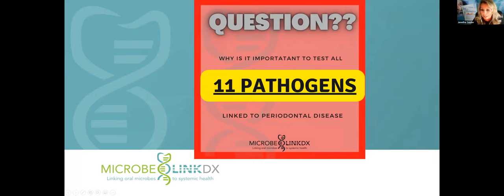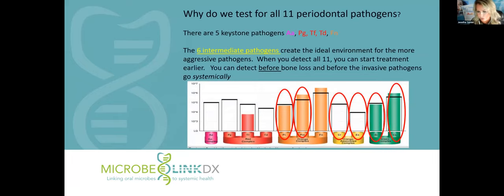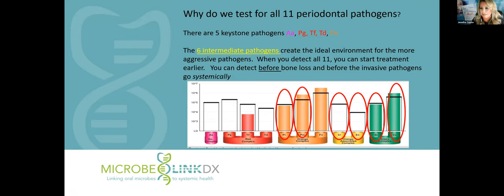Why is it important to test for all 11 pathogens? We've got five keystone pathogens — your AA, your red complex, and your fusobacterium, which is the orange complex. Those are traditionally called your keystone pathogens. But when we have those intermediate pathogens — six intermediate pathogens — those are the ones where, when you detect them, you can start treatment before bone loss. Once you get into those really aggressive pathogens, that's when you get bone loss. So testing for those intermediate pathogens gives you an opportunity to do some really good treatment.